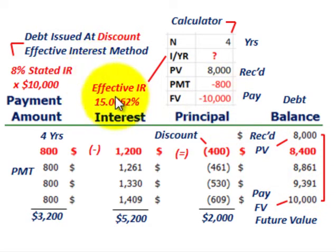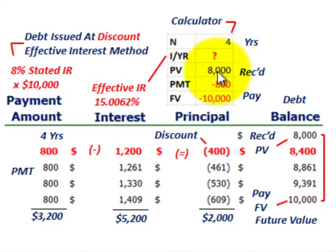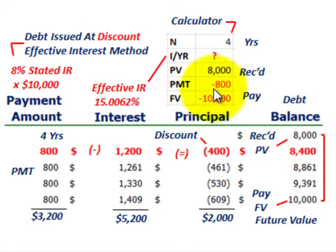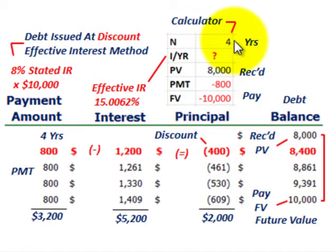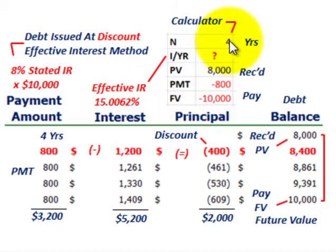To determine effective interest for a discount, use your financial calculator: enter the present value, the payment amounts — which are the interest payments — and the future value of what you have to pay at maturity. Make sure you use the correct number of periods. In this case, it's a yearly interest rate, so we enter four years.